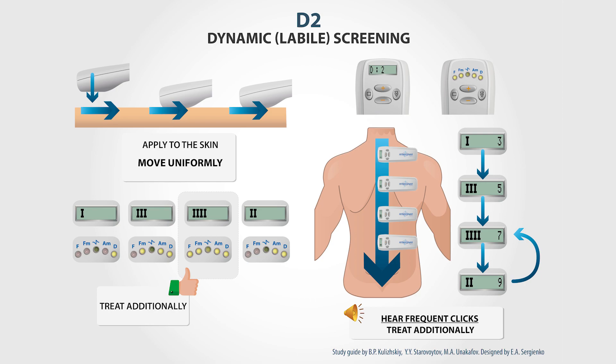D2: Dynamic or labile screening. This is a new, recently developed mode that presents only in the devices manufactured by Rhythm OKB-Zao. This mode allows finding the points for additional treatment within large skin areas using the moving electrode. It is featured in both Chance01 scanner and Chance01 scanner M device models.